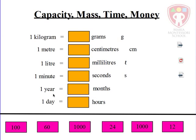Welcome back — I'm sure you all got this. Let's quickly go over it. We know that 'kilo' means thousand, so one kilogram is a thousand grams. Let's put that in — yes, that's correct.